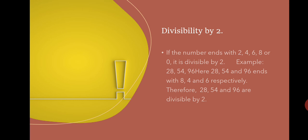Divisibility by 2: If the number ends with 2, 4, 6, 8 or 0, it is divisible by 2. Let me take the examples 28, 54, 96. Here 28, 54 and 96 end with 8, 4 and 6 respectively. This means we have to look at the unit place of the given number. In 28, 8 is the 1's place; in 54, 4 is the 1's place; and in 96, 6 is the 1's place. Therefore, 28, 54 and 96 are divisible by 2.